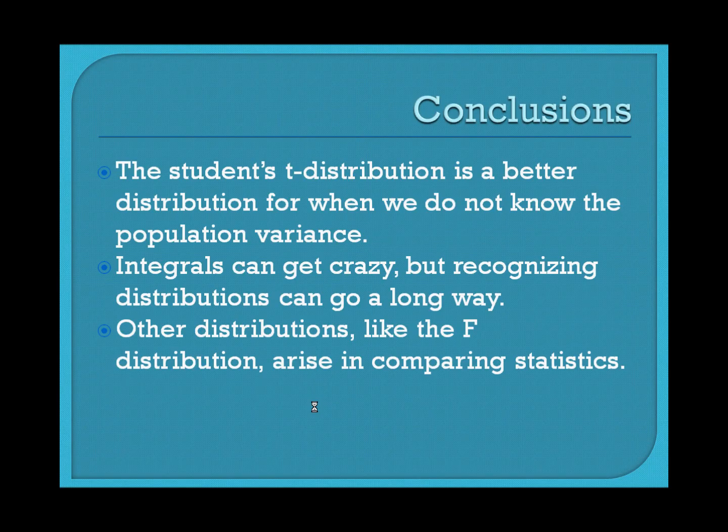In conclusion, we use the t-distribution when we don't know the population variance. What we've shown is that it's related to the chi-squared distribution and the normal distribution, which is why it retains roughly the same normalized shape. Throughout the derivations, we kept recognizing integrals that matched known distributions — like beta or normal — and used those properties instead of computing everything from scratch. There are plenty of other distributions such as the Weibull and f-distributions, so we've barely touched the surface. Thanks for watching — this is Big Mac saying later.